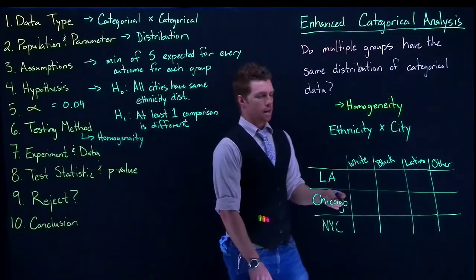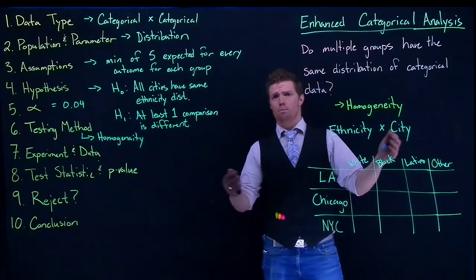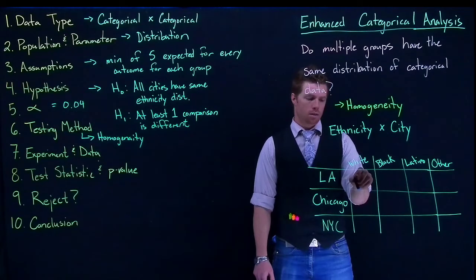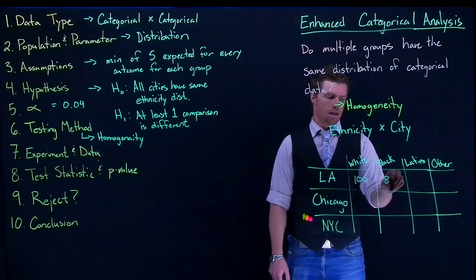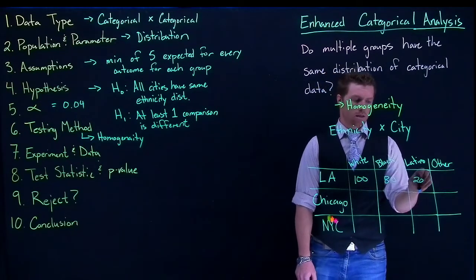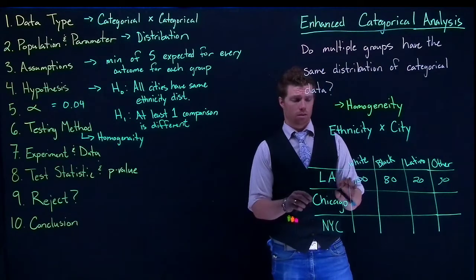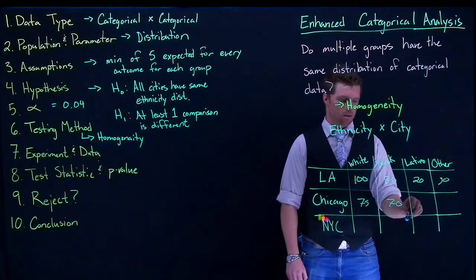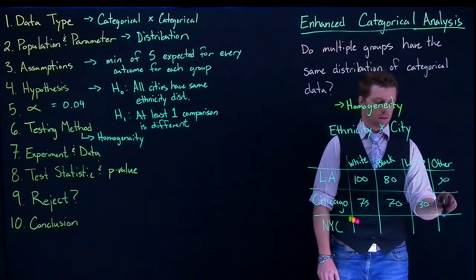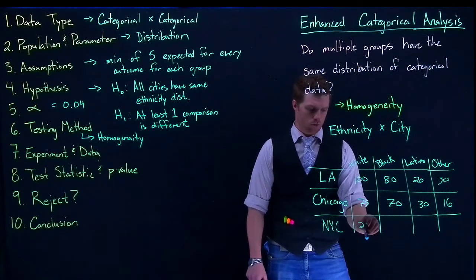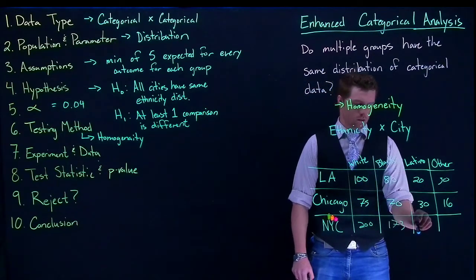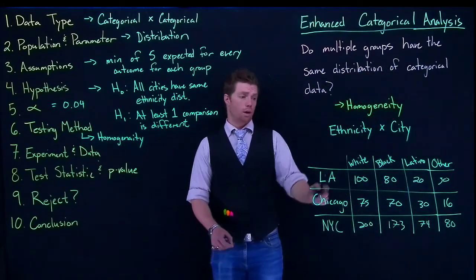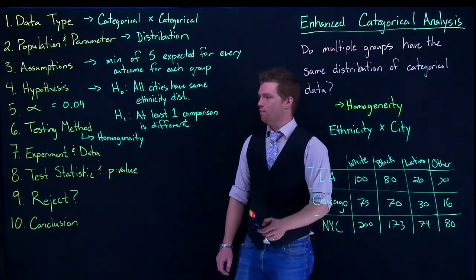We do our experiment and collect our data. From each city in our big study — randomly selected, maybe around 400 people — we found counts like: for LA, 100, 80, 20, and 50; for Chicago, 75, 70, 30, and 16; and for New York, 200, 173, 70, 74, and 80. These are just example numbers to fill in our table.